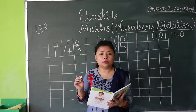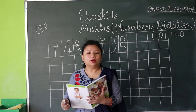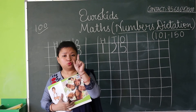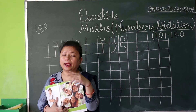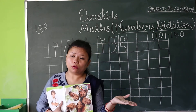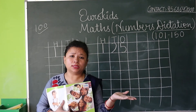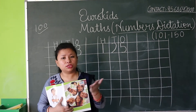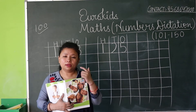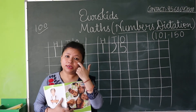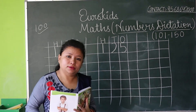Now my next number is 110. 110 — it means one and ten; ten means one and zero. So you write 1-1-0 — 110.